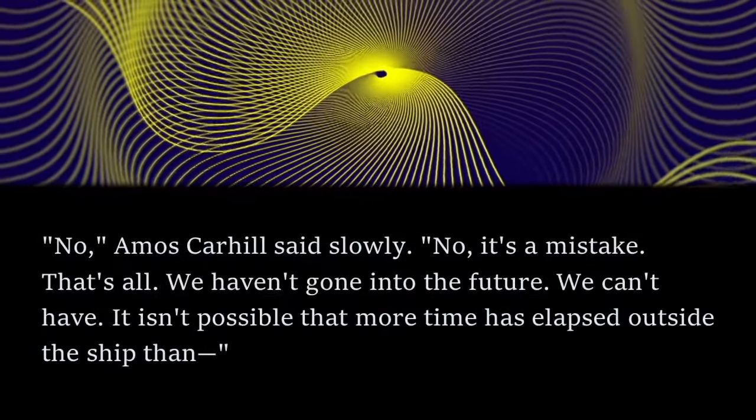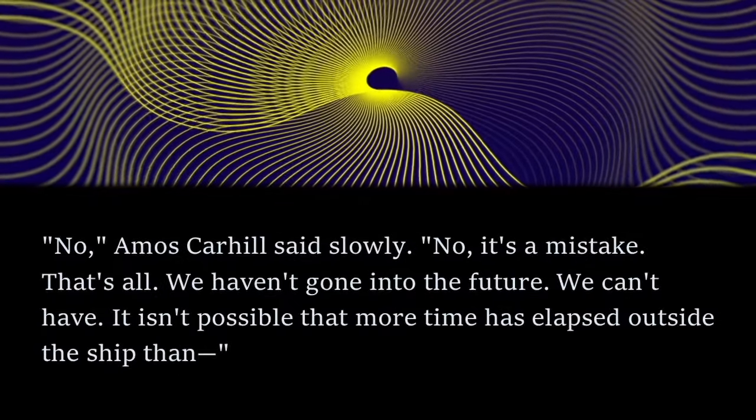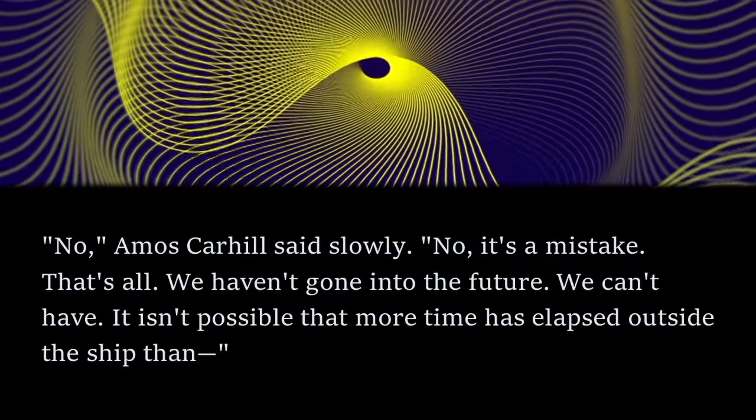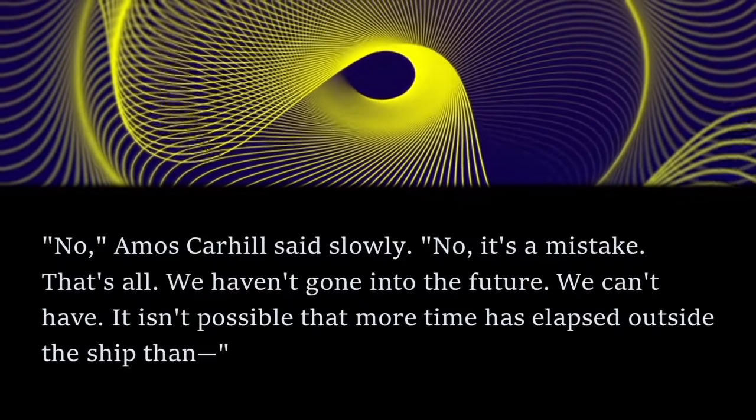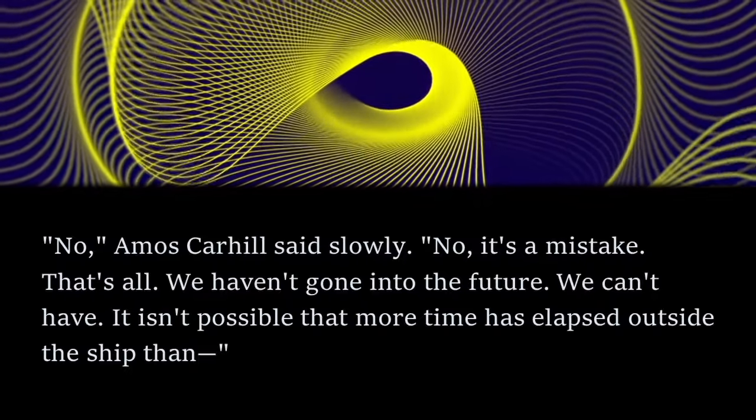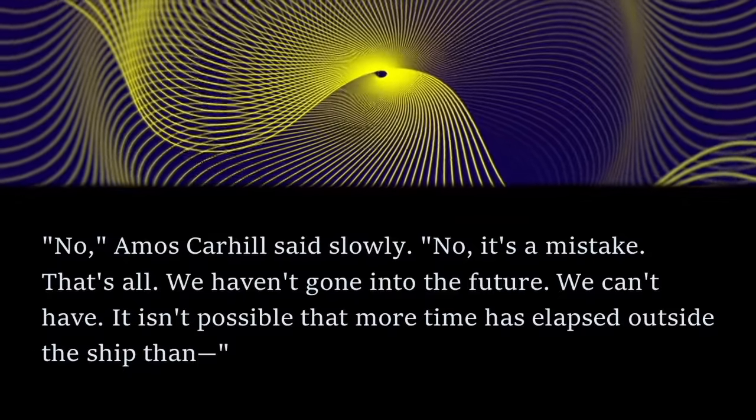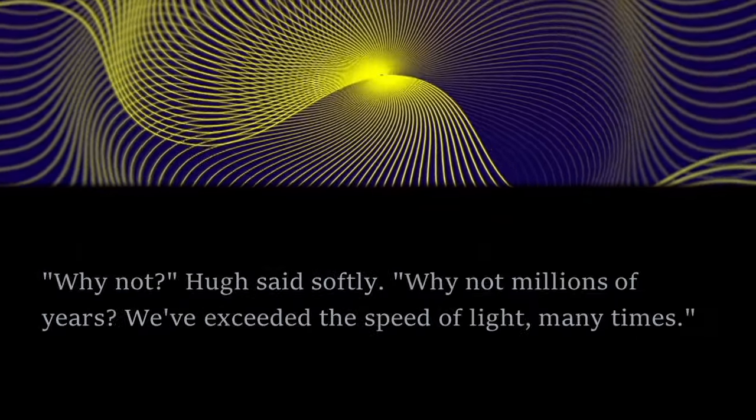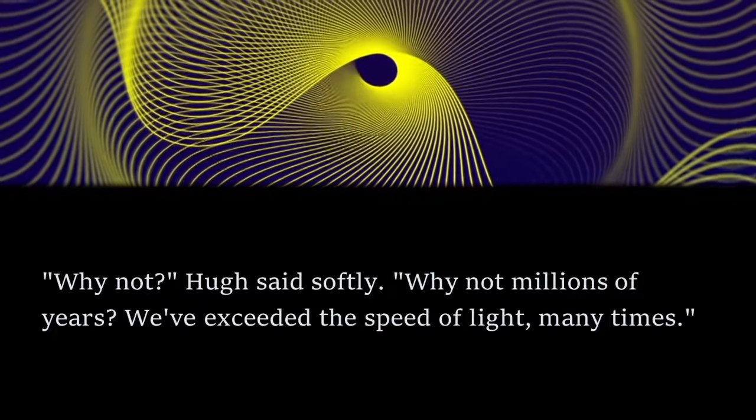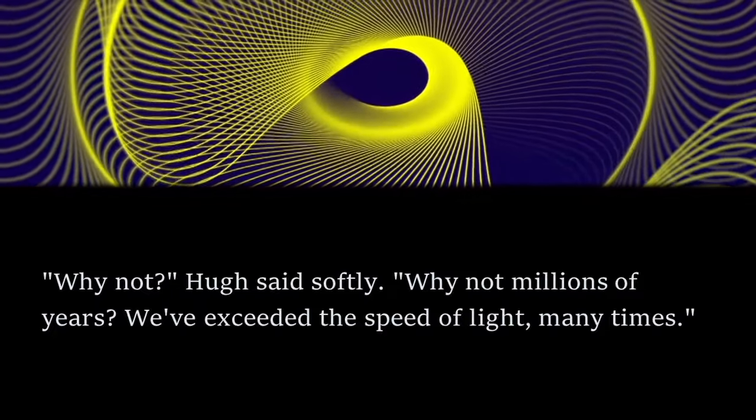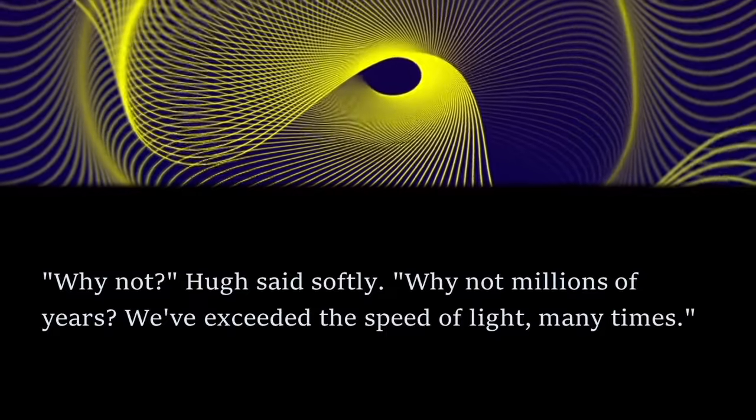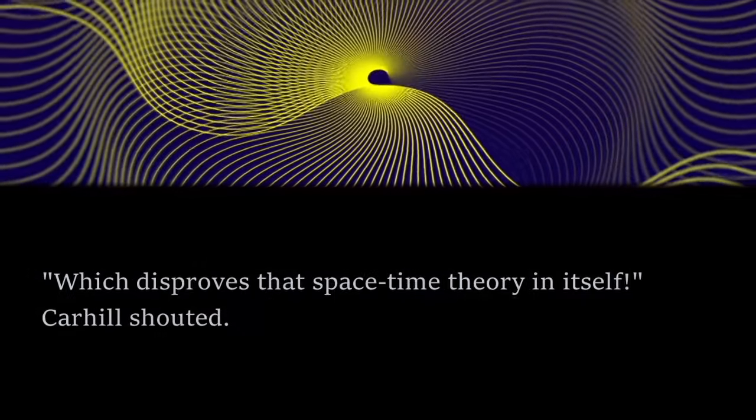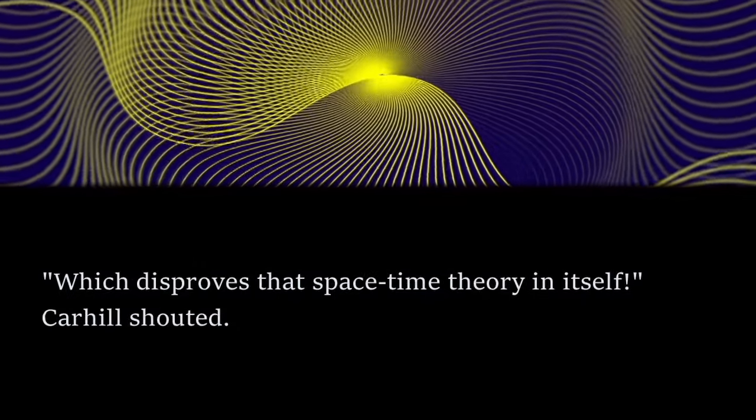No, Amos Cahill said slowly. No, it's a mistake. That's all. We haven't gone into the future. We can't have. It isn't possible that more time has elapsed outside the ship than... Why not? Hugh said softly. Why not millions of years? We've exceeded the speed of light many times. Which disproves that space-time theory in itself! Carhill shouted.